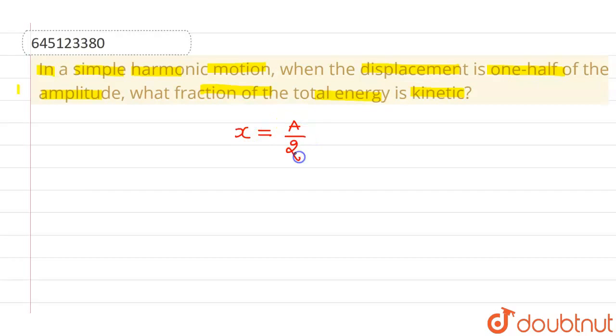That means this is a/2. Now, we also know that total energy of a particle performing simple harmonic motion is given by (1/2)ka².